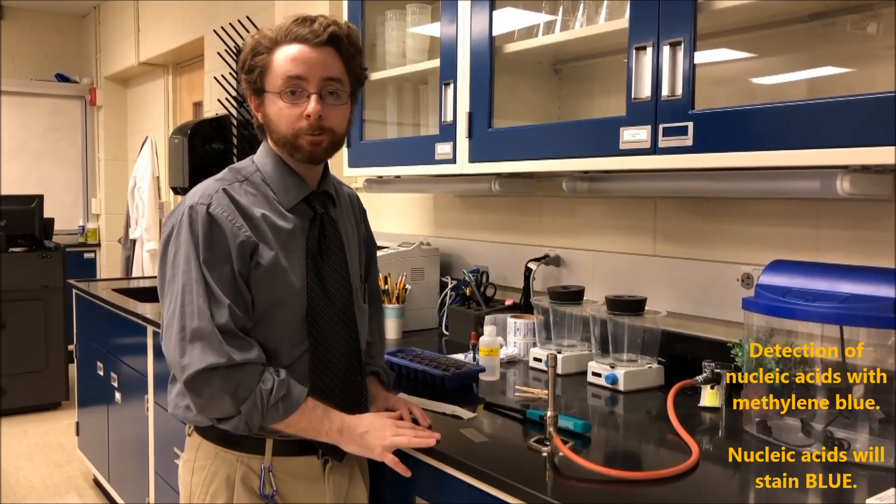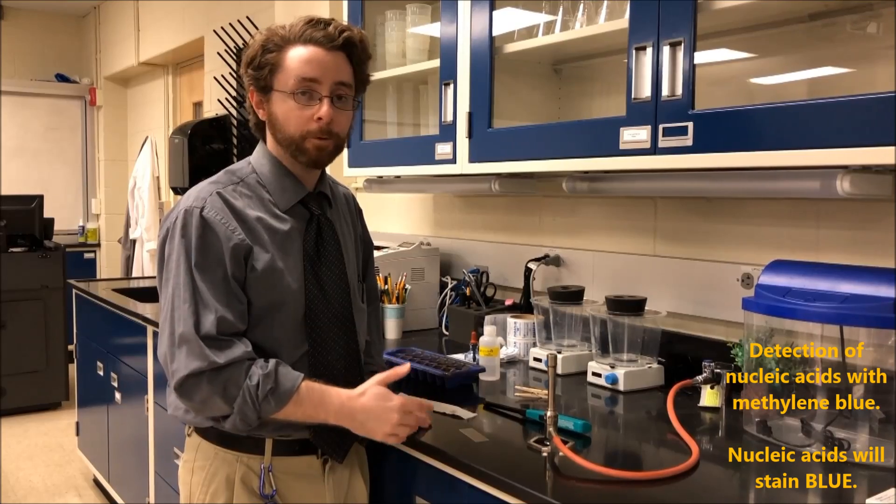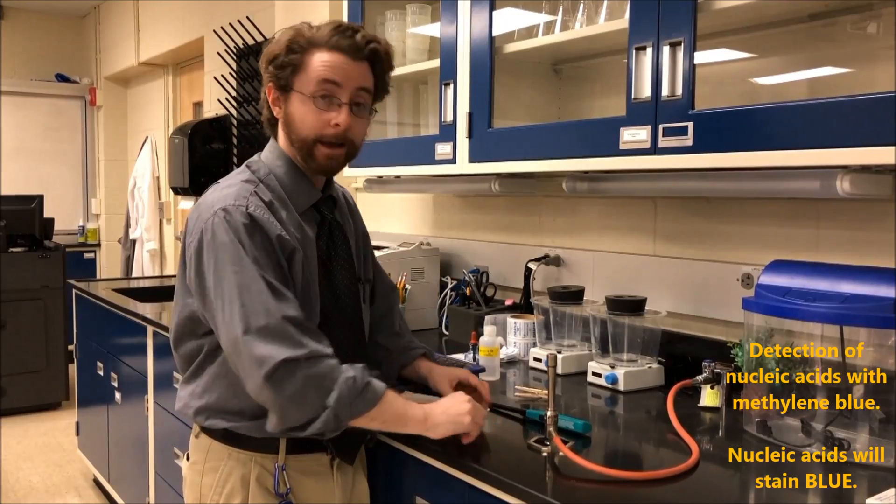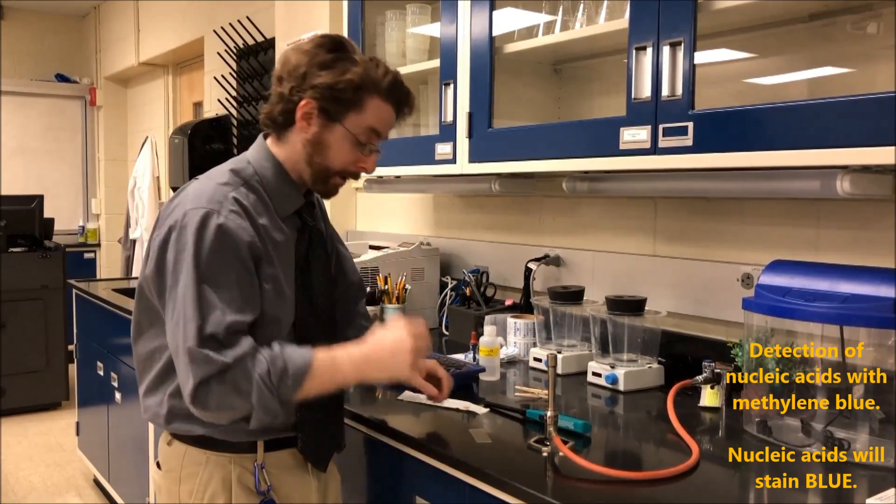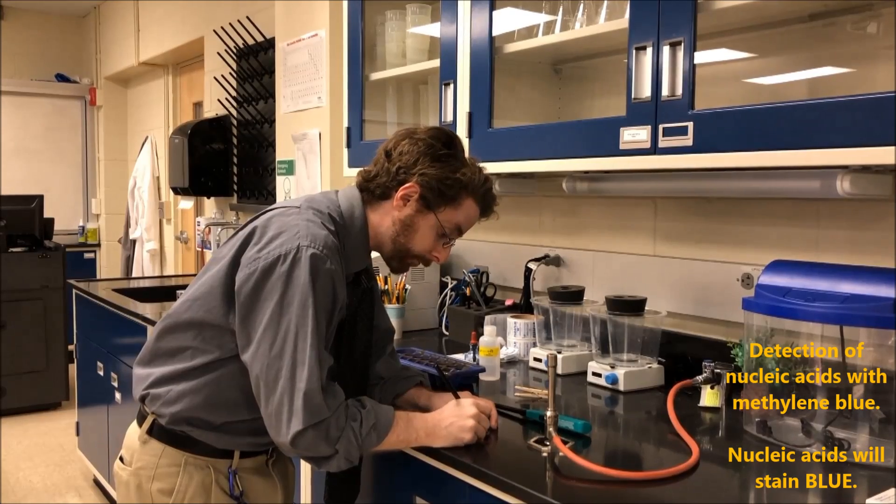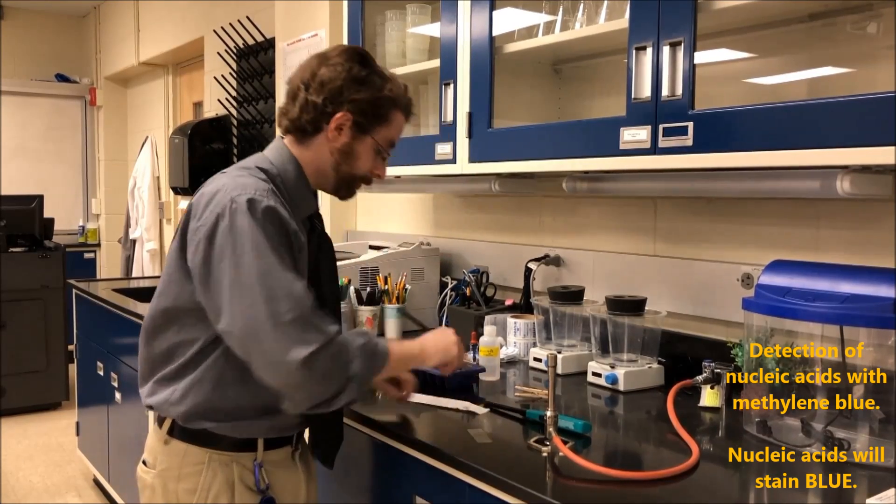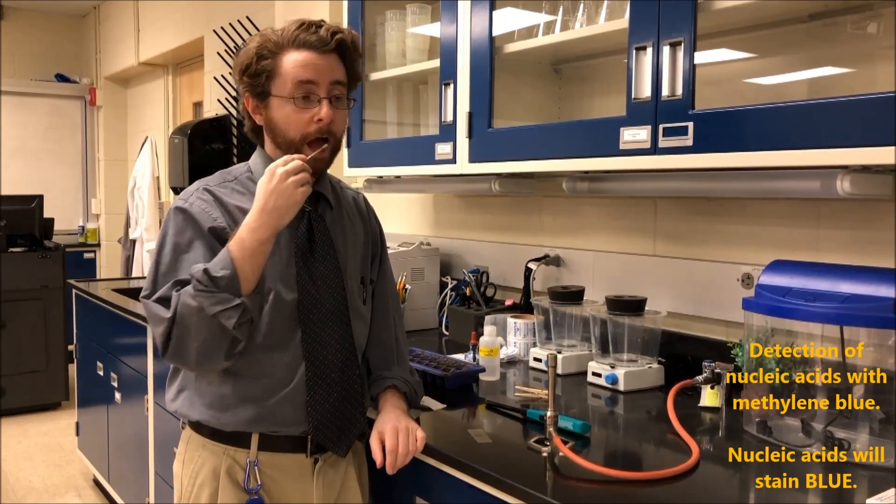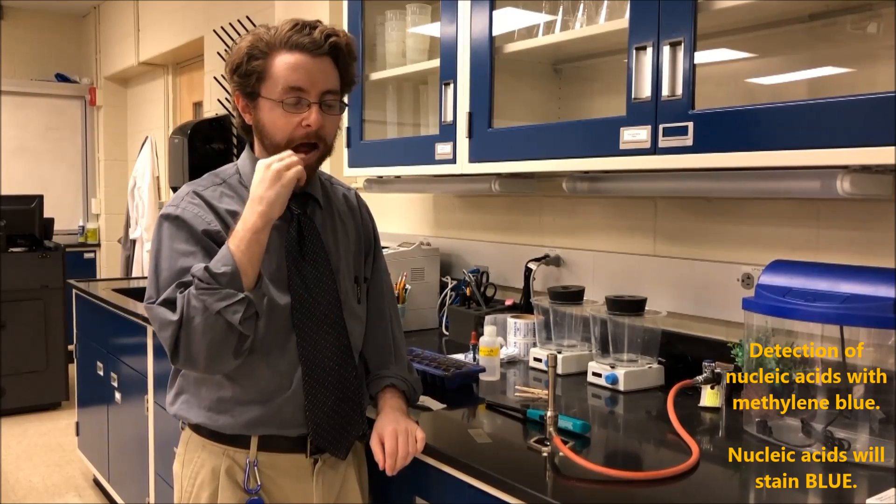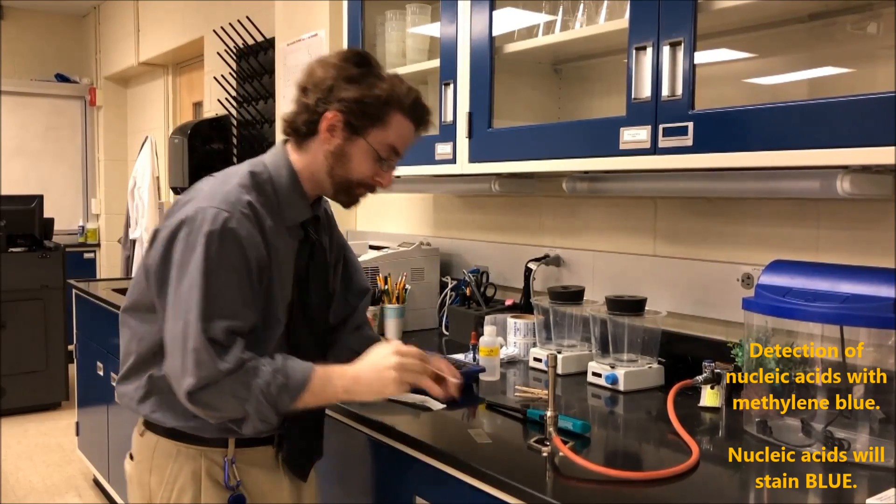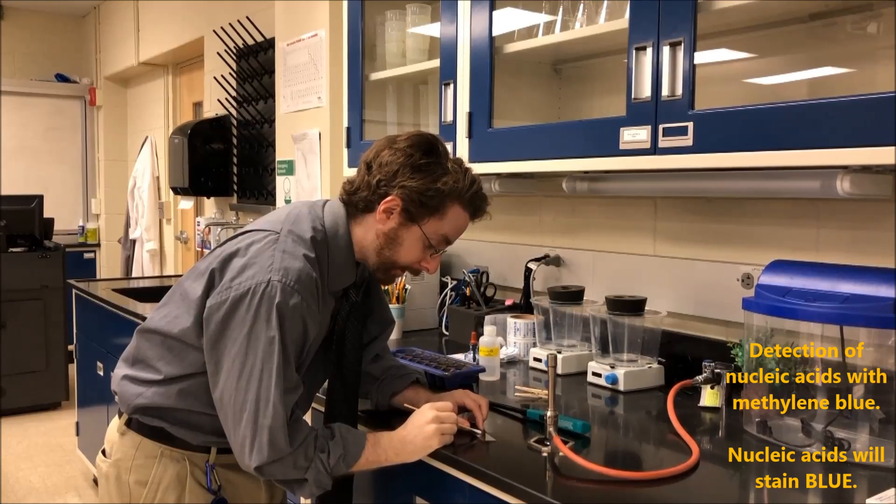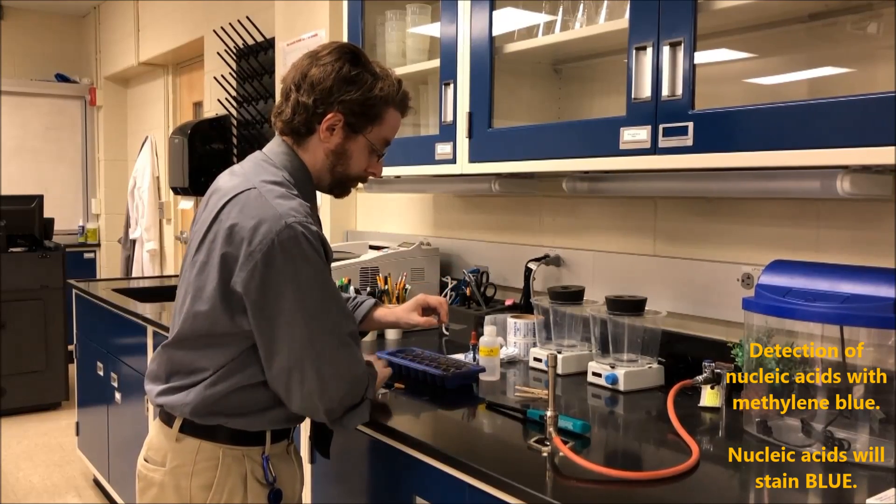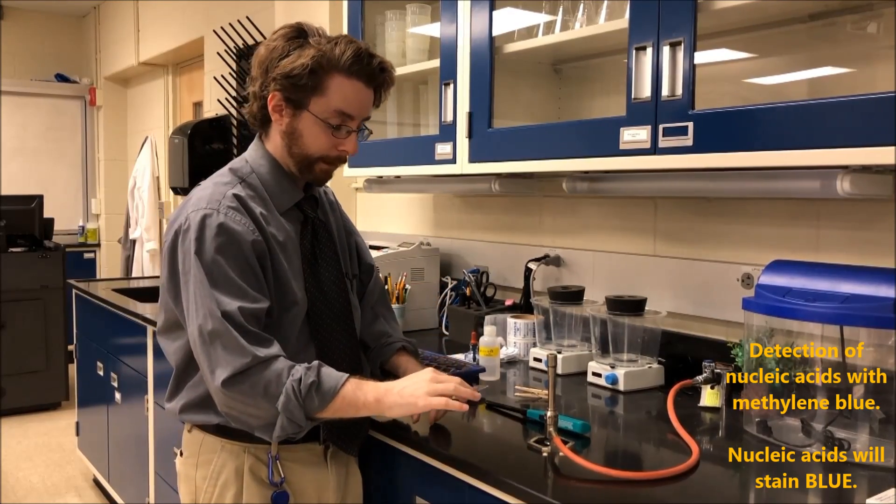To look for nucleic acids, we can use methylene blue. And an example with methylene blue we can use is staining cheek cells. So I will take a glass slide and my wax pencil and I'm going to draw a circle. And then I'm going to take a sterile swab and swab for some cheek cells. And then I'm going to smear it into my circle. Allow that to air dry for a second.